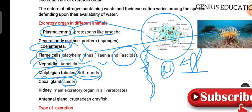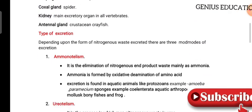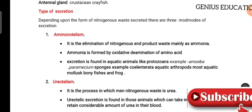In spiders, the excretory organ is the coxal gland — this is frequently asked in competitive exams including NEET and NET. The kidney is the main excretory organ in vertebrates including humans and other mammals. Antennal glands are responsible for excretion of waste in crustaceans like crayfish. Now let's look at the types of excretion.